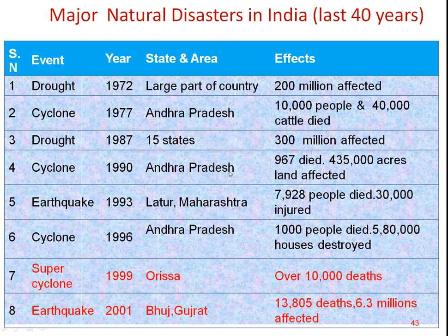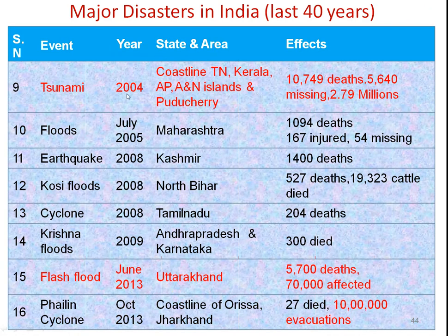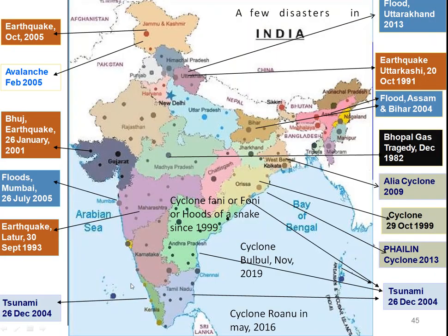Let's have a quick glimpse of disasters that have occurred in India over the last 40 years. The super cyclone in Odisha in 1999 was one of the most remarkable, with around 10,000 deaths. The Bhuj earthquake in 2001 caused more than 13,000 deaths. The 2004 tsunami affected Indonesia and also eastern coastal areas like Tamil Nadu. Flash floods in Uttarakhand — particularly Kedarnath, where pilgrims were stranded and lives were lost due to cloudbursts — are also notable.